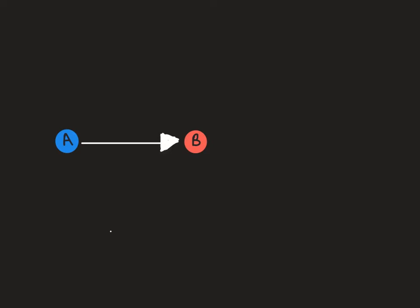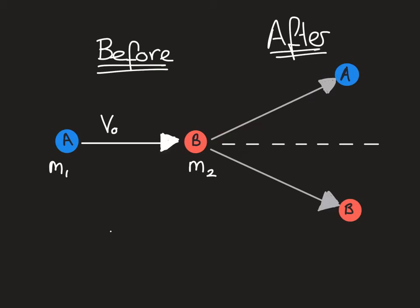Here is our first situation. We've got two objects, A and B. B is stationary and A is moving with a velocity in this direction. We'll label our knowns in symbols because we're working in symbols to start with. M1 is the mass of A, M2 is the mass of B, and A before the collision is moving with velocity V0. After the collision, A moves off in this direction and B moves off in this direction, and these arrows show you the vectors of the velocity of those two objects. We can mark on these two angles and we're going to need to use those in our analysis.